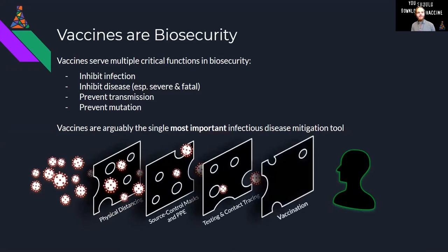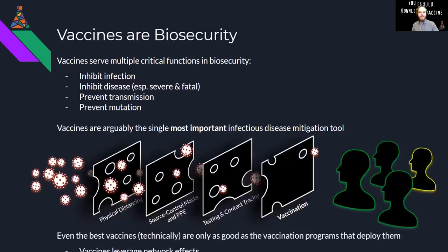This Swiss cheese model is something I'm borrowing from Ian McKay, who adopted a similar illustration for COVID. Although mine is only showing a handful of risk prevention interventions and isn't really to scale in terms of each intervention's efficacy in stopping pathogens from infecting a person, the illustration is still useful insofar as it makes the case for applying multiple additive layers to mitigate risk. Vaccines are unique among these interventions because they both augment a person's ability to fight off infection if prior layers of protection fail, and if applied at scale across the population, vaccines can limit collective exposure to pathogens by reducing the number of available hosts and transmitters.